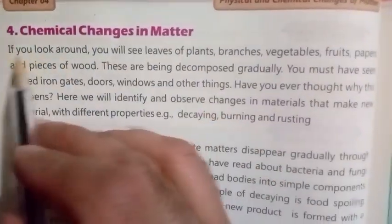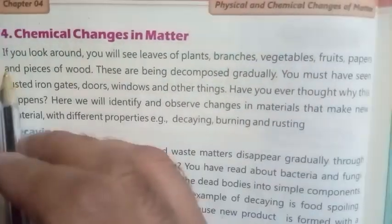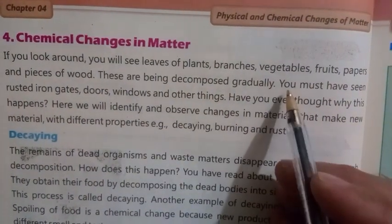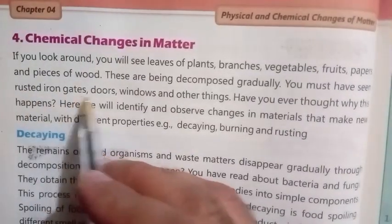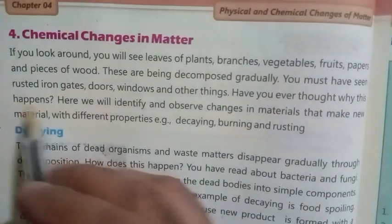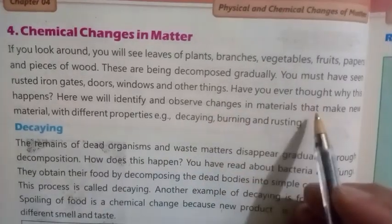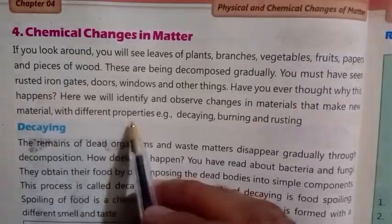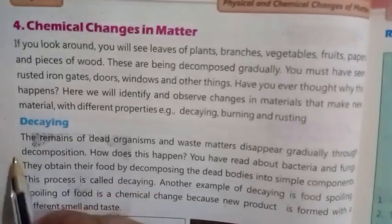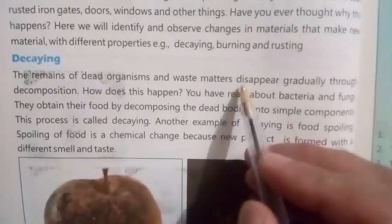Chemical changes in matter: if you look around, you will see leaves of plants, branches, vegetables, fruits, peppers, and pieces of food being decomposed gradually. You must have seen rusted iron gates, doors, and windows. Have you ever thought why this happens? Here we will identify and observe changes in materials that make new materials with different properties, for example decaying, burning, and rusting.